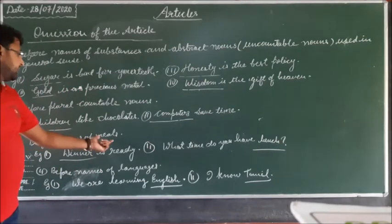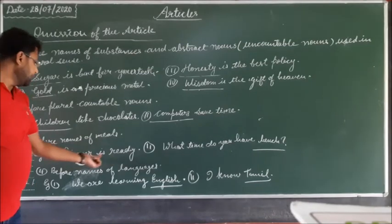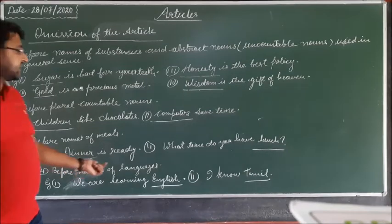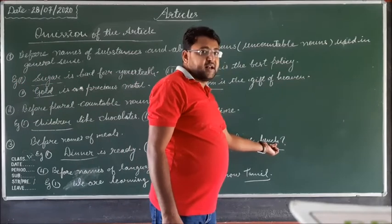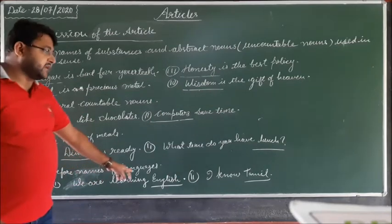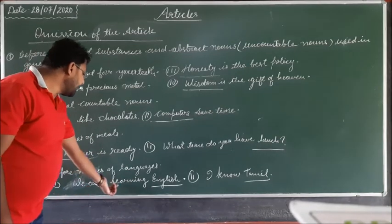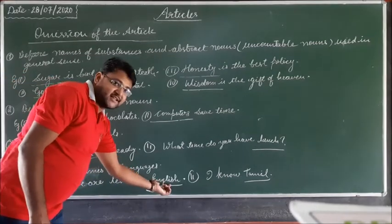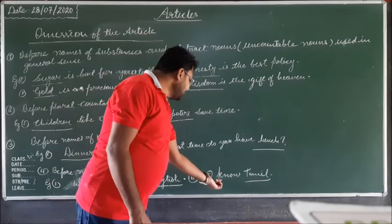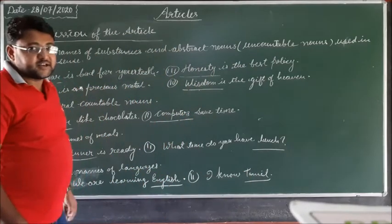The third case of omission is before names of meals. For example: 'Dinner is ready' — dinner is a meal, so no article before it. 'What time do you have lunch?' — lunch is also a meal, no article used. The fourth case is before names of languages, like English, Hindi, French. For example: 'We are learning English.' Before a language name like English, Tamil, or French, we never use an article.